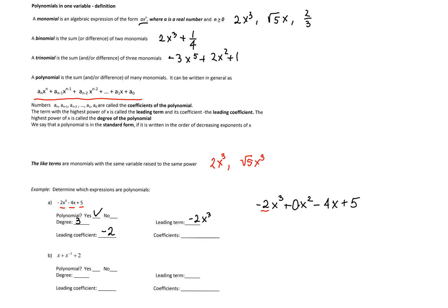Therefore the coefficients of the polynomial are negative 2, 0, negative 4, and 5.